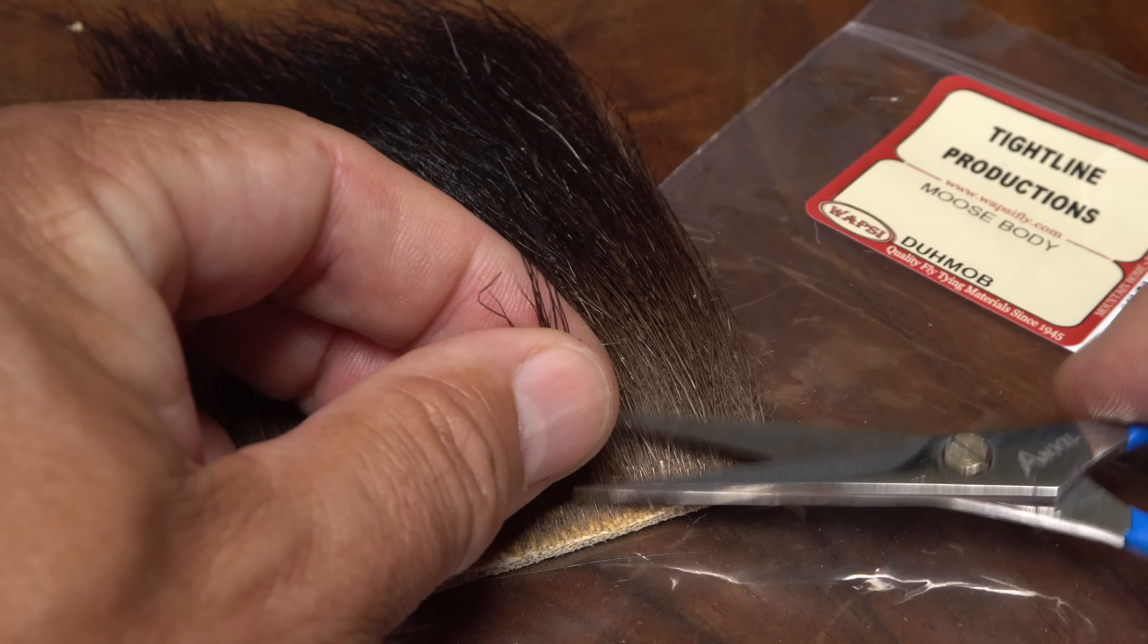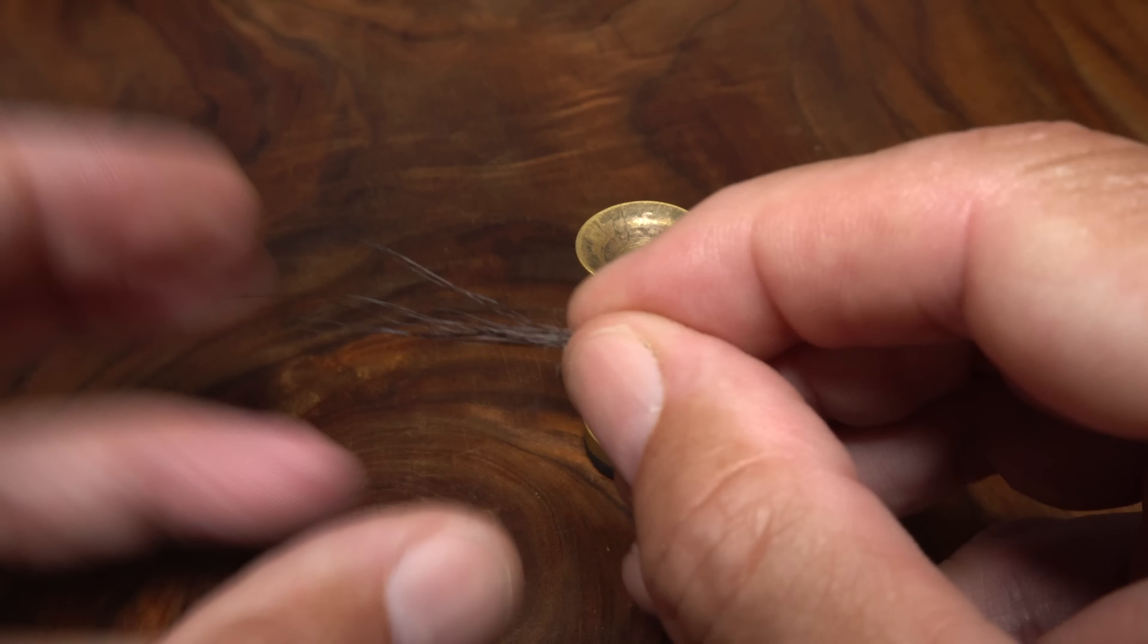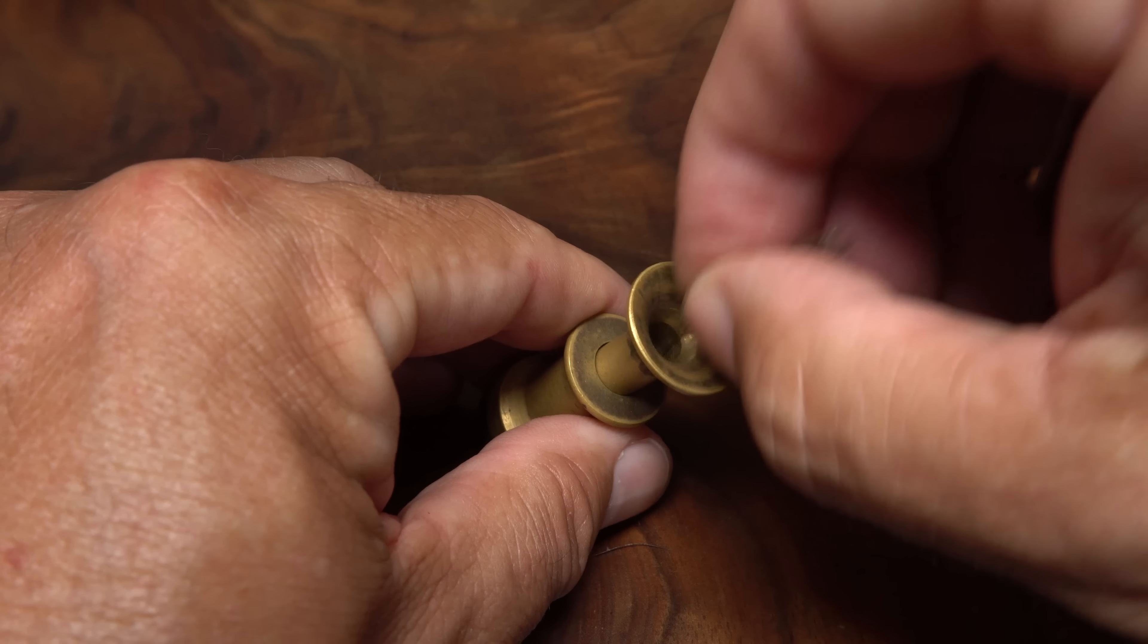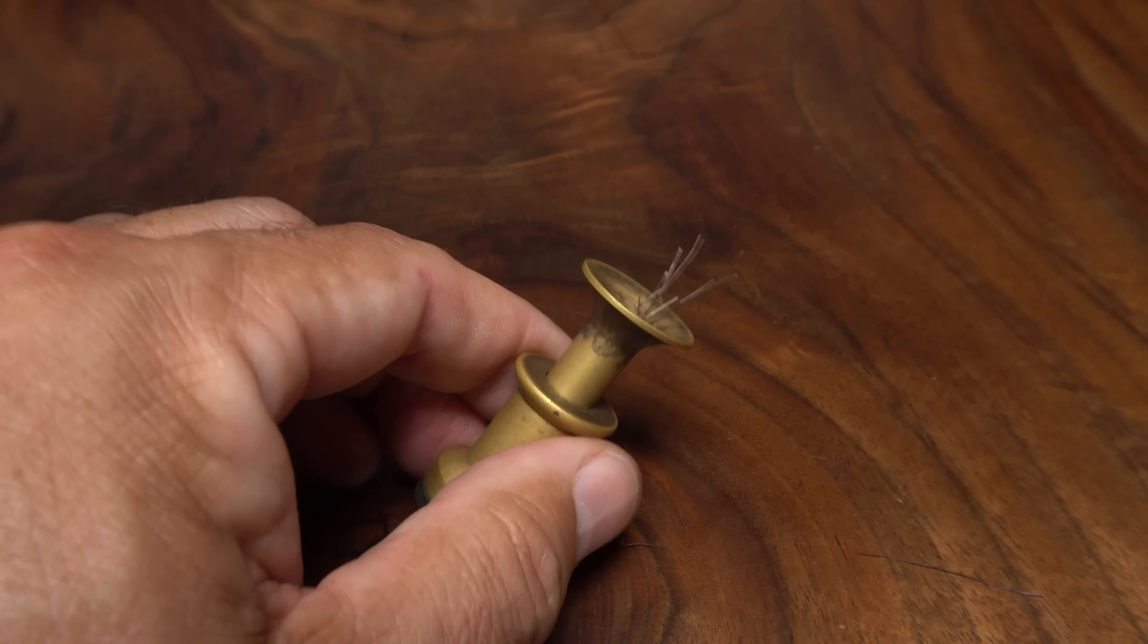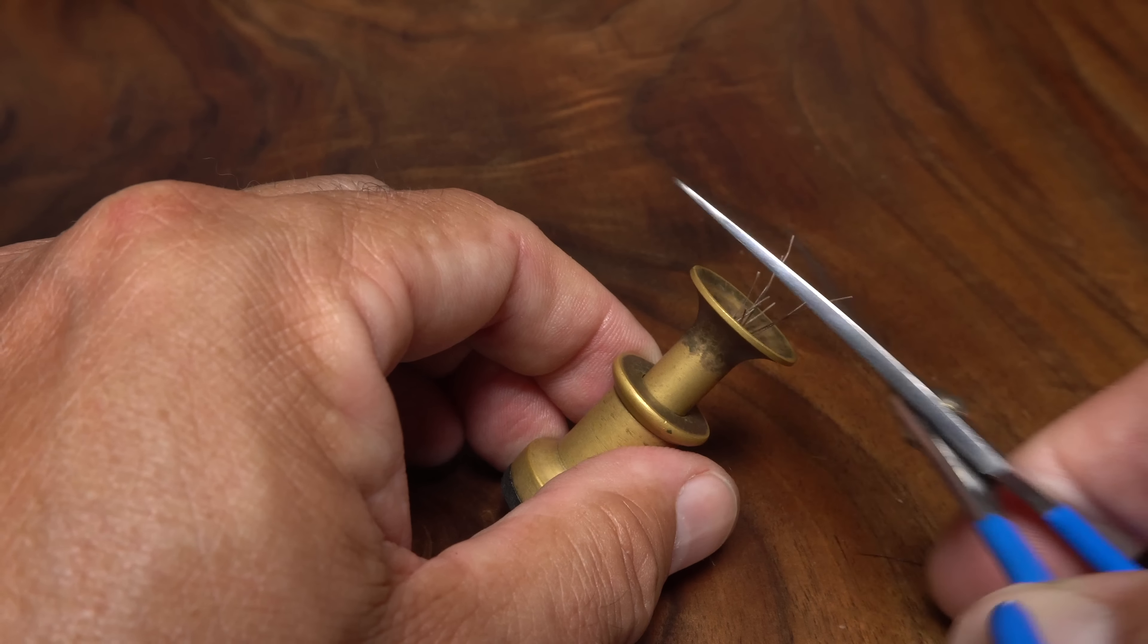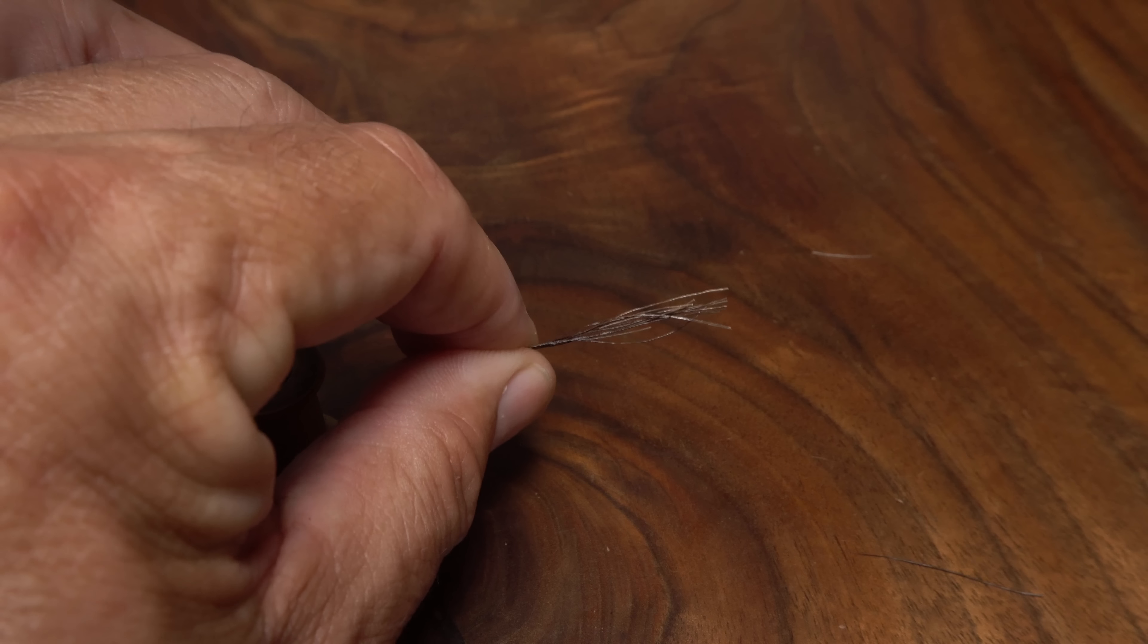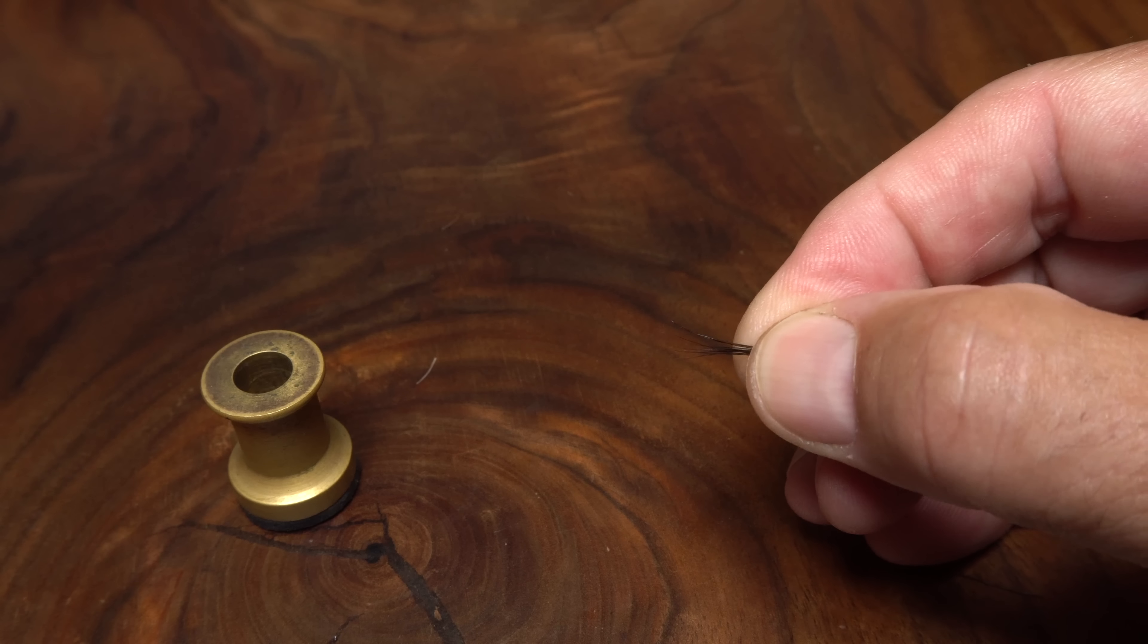Moose body hair is used for the tail of the fly. Snip a dozen or so hairs free from the hide, then strip out all the fuzzy underfur. Place the hair tips first into a stacker and give it a little stack. I like to trim off the somewhat unwieldy butts. Give the hair a thorough stacking, then tilt your stacker and tap a few times to concentrate the hair in the bottom of the tube. Remove the hair from the stacker by the aligned tips, then pass it to your right hand while keeping those tips aligned.